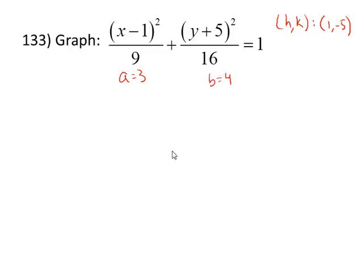What we do here is we start at the point 1, negative 5. Since a is 3, we're going to move 3 to the right and 3 to the left from that point. Because b is 4, we're going to move up 4 and down 4. And then we're going to draw an oval through those four points. I'll show you it with more detail on the next screen.